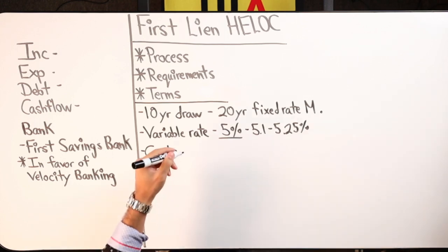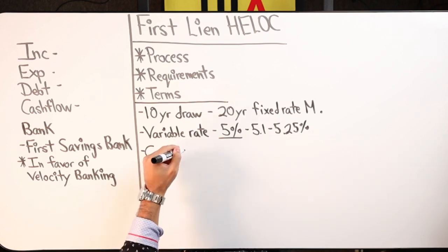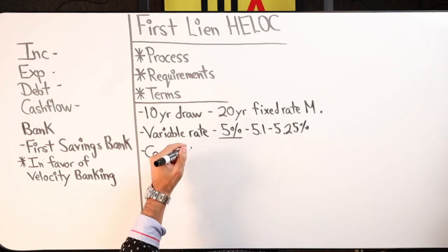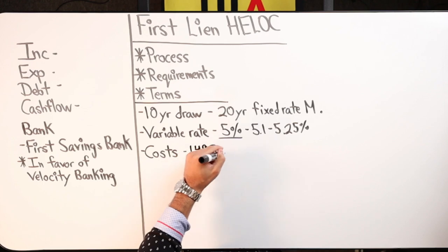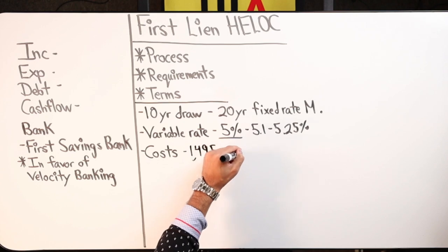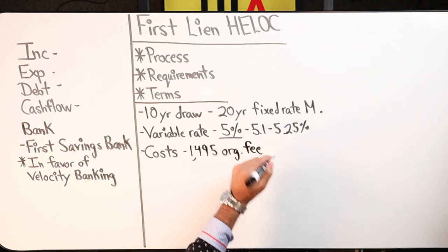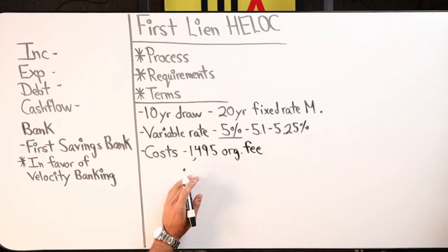There's the bank fees, you've got appraisal, you've got title, and then you've got state fees. So the only bank fee is a flat $1,495 origination fee. The appraisal is usually about $450 to $500, depending on the market and at that time.